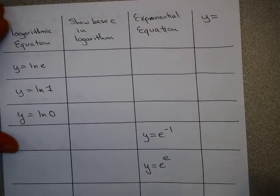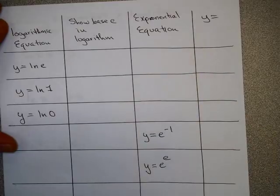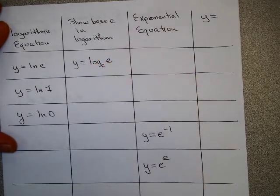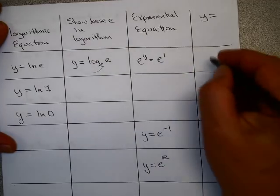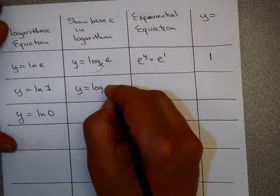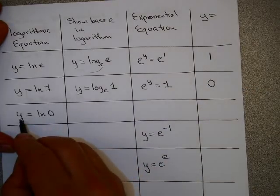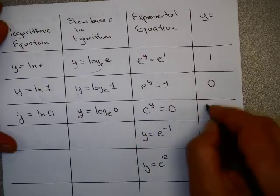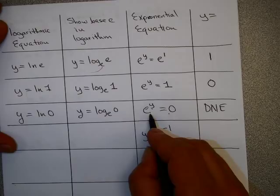Here's a problem that you can see on WebAssign. You're given the logarithmic equation. You're supposed to write it with base e in the logarithm, convert that to an exponential equation, and then tell me what y equals. Writing y = ln(e) with base e in the logarithm gives me this. The exponential equation is e^y = e. This is e^1, so that should tell you that y = 1. y = ln(1) is the same as y = log base e of 1. That's e^y = 1, and that should tell you that y = 0. Log base e of 0 equals y gives you e^y = 0, and that does not exist. You can't raise a positive number to a power and get 0. e is 2.718, so that doesn't work.